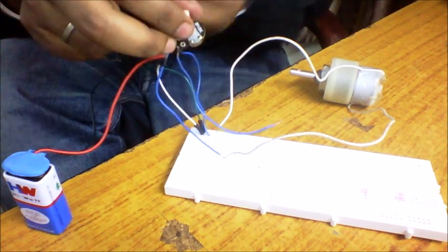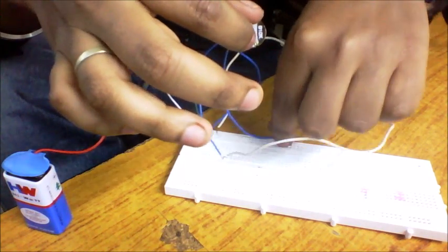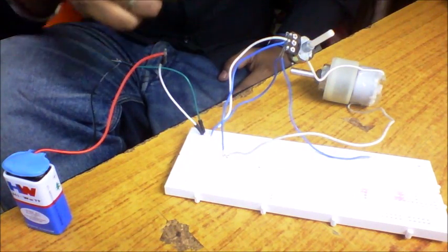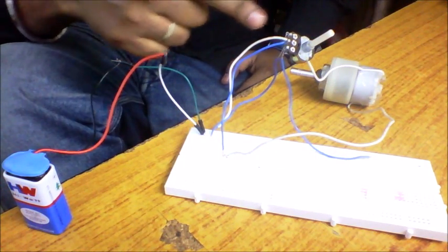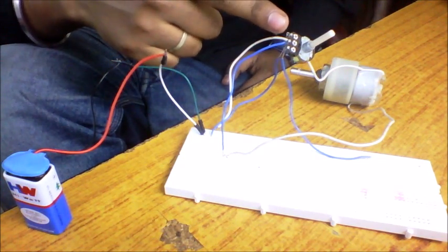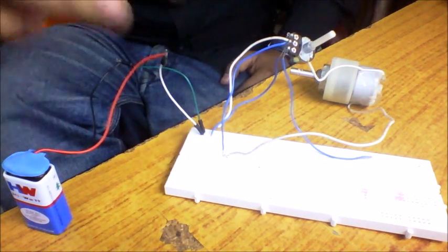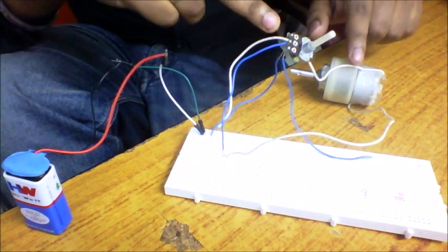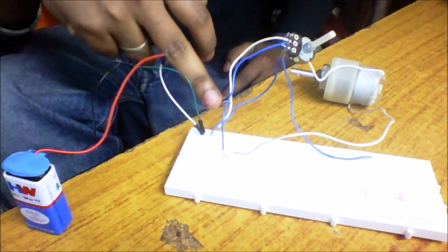So let me again tell you the simple connection. Just connect the positive to one end, negative to one end. Connect the middle terminal of the potentiometer to the positive side of the battery. The other terminal, any one of the terminal of the potentiometer will connect in series with the motor and another side of the motor will connect to the ground.